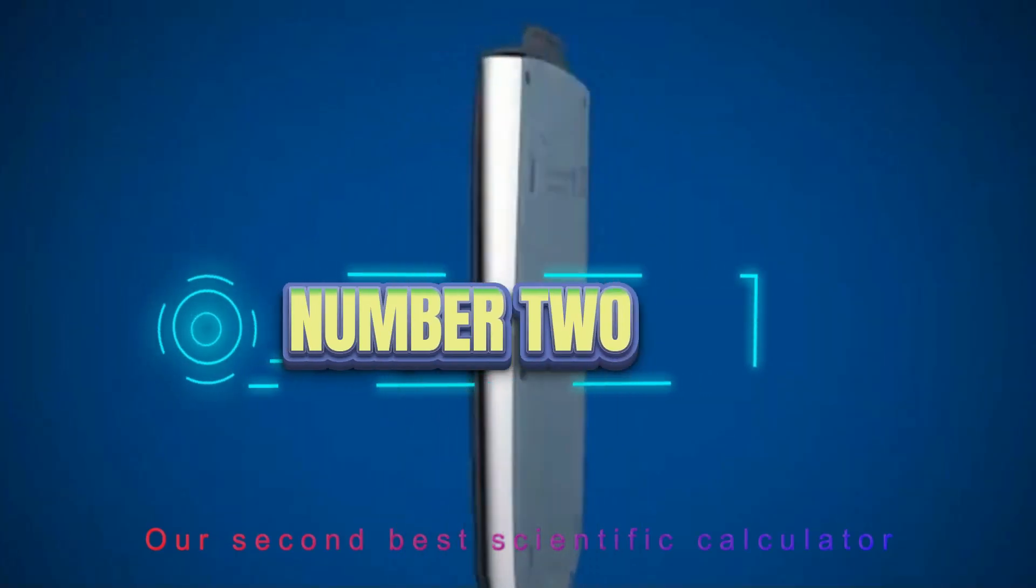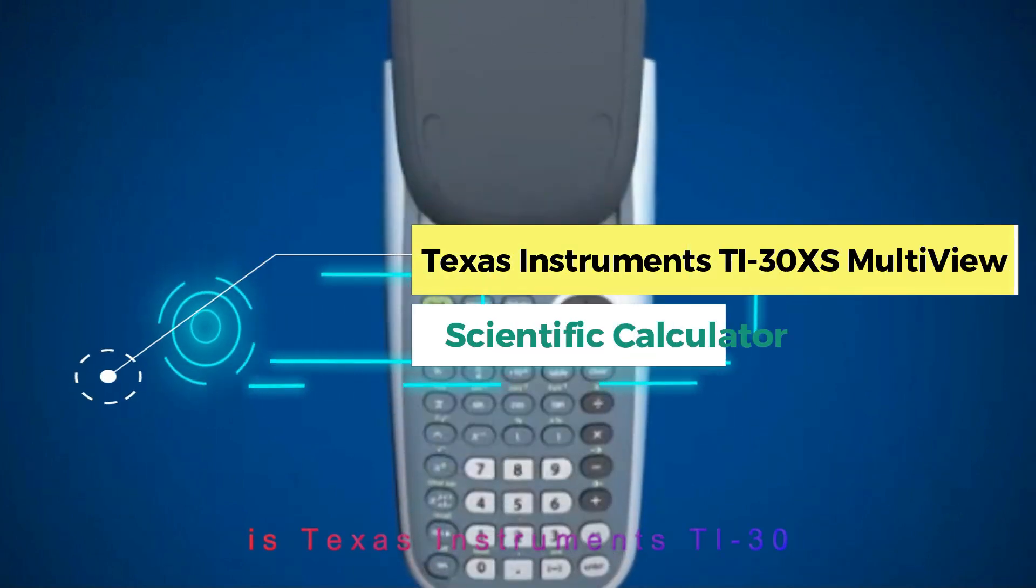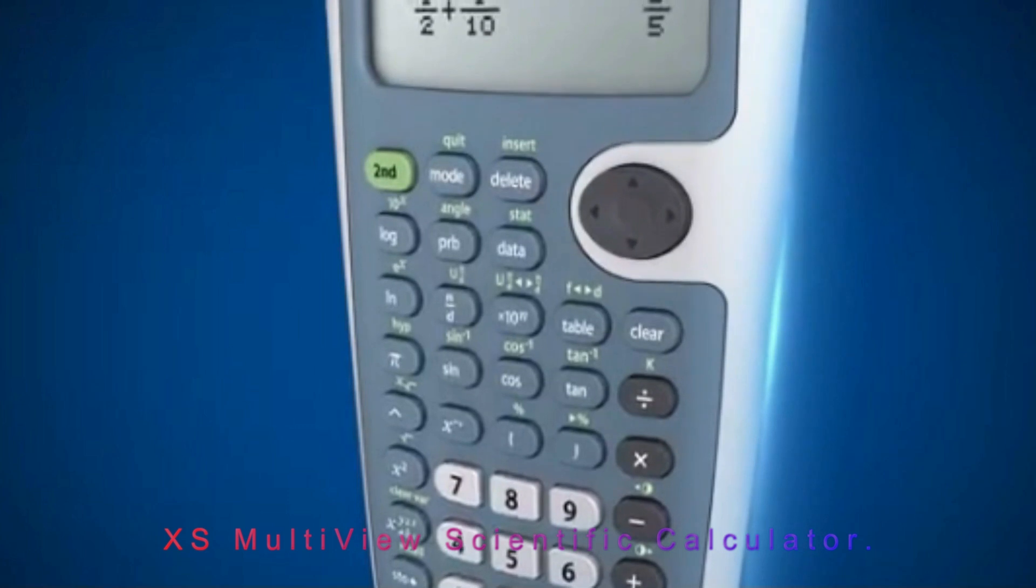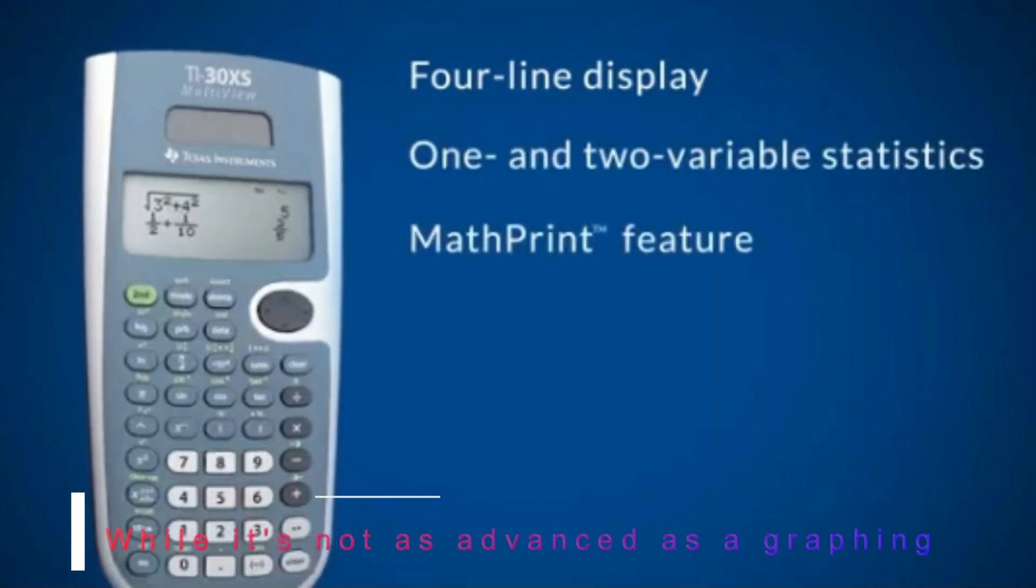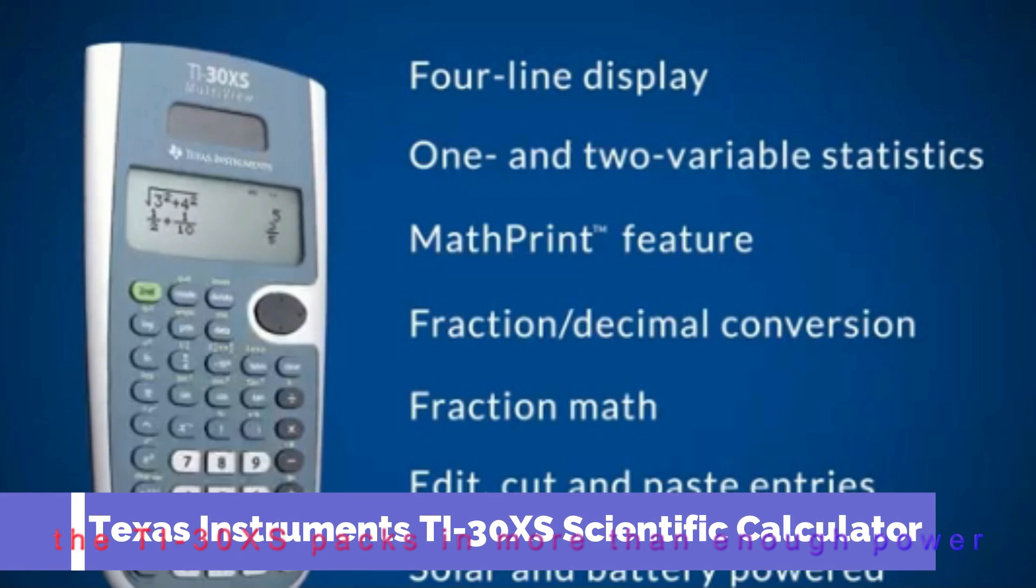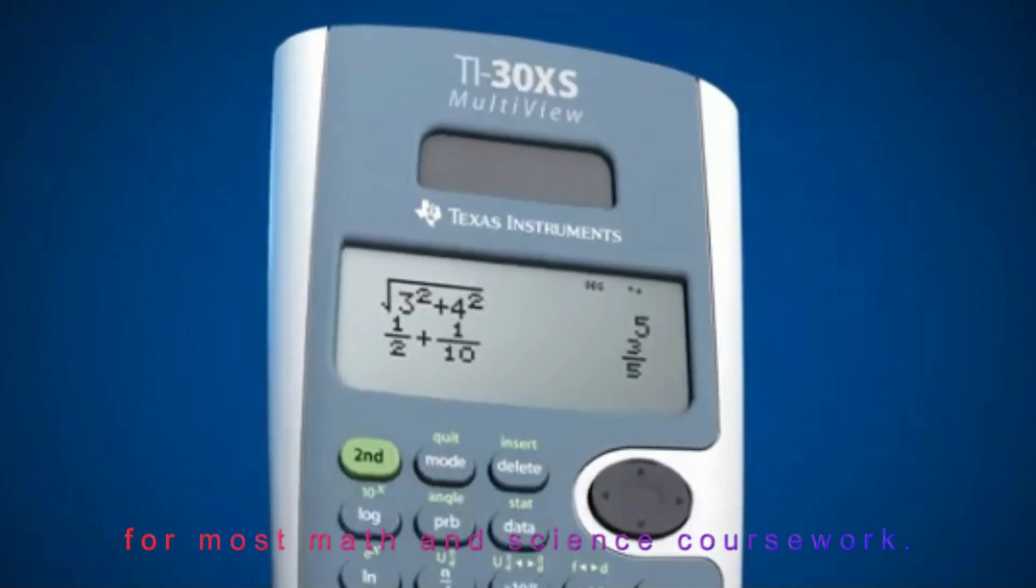Our second best scientific calculator is Texas Instruments TI-30 XS Multi-View Scientific Calculator. While it's not as advanced as a graphing calculator, the TI-30 XS packs in more than enough power for most math and science coursework.